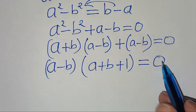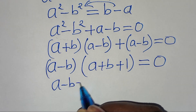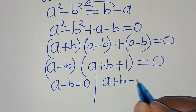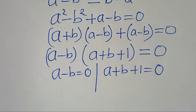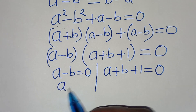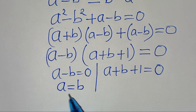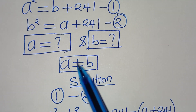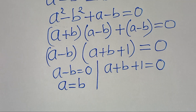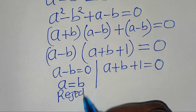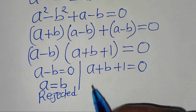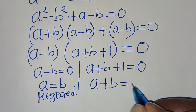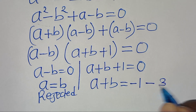Factoring out (a - b), we get (a - b)(a + b + 1) = 0. This gives two cases: a - b = 0, meaning a = b, or a + b + 1 = 0. The first case violates the condition that a ≠ b, so it is rejected. Proceeding with the second case, a + b = -1. Let's call this equation 3.